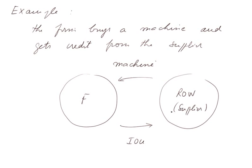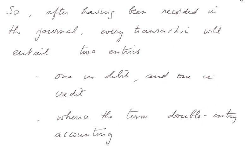Here's the supplier, which belongs to the rest of the world. At the time of the transaction, the machine enters the firm, enters the assets of the firm, and an IOU leaves the firm. So after having been recorded in the journal, every transaction will entail two entries: one in debit somewhere and one in credit elsewhere, hence the term double-entry accounting.